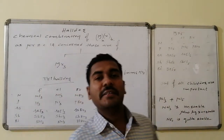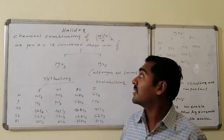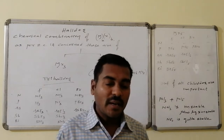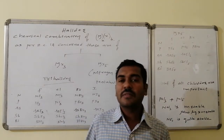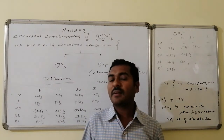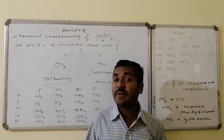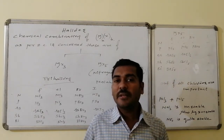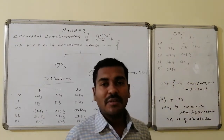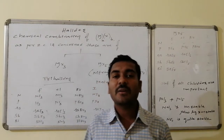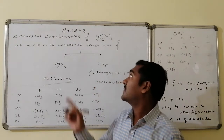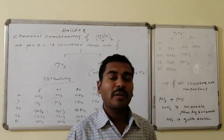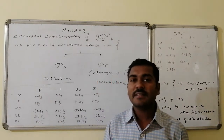Welcome friends. I have a discussion over the halides of the 5A group elements. Halides are those compounds which are the chemical combination of a 5A group element with the halogen atom. If I consider the 5A group element as M and halogen as X, these are the chemical combination of the 5A group element with the halogen.